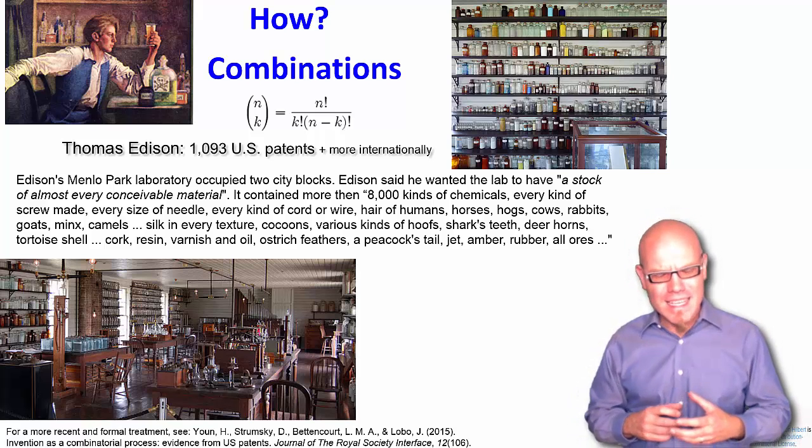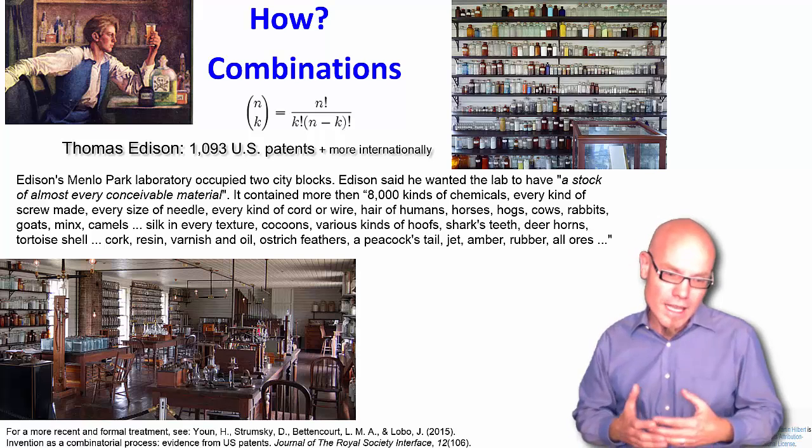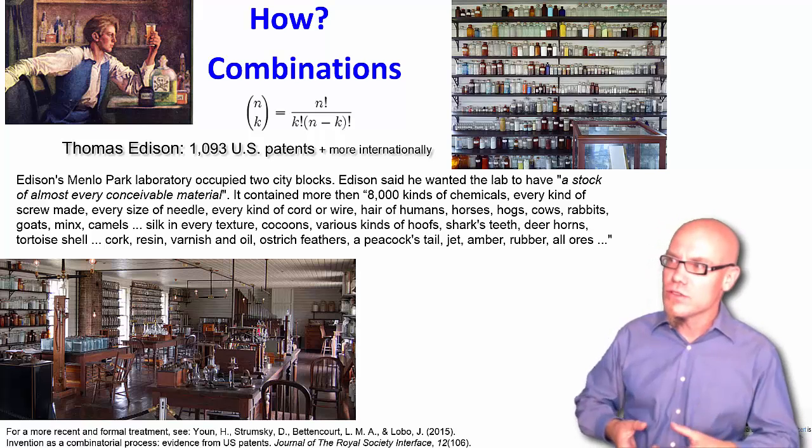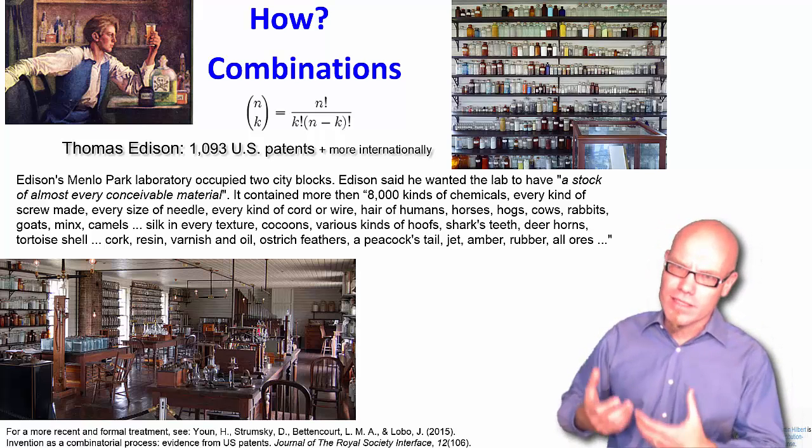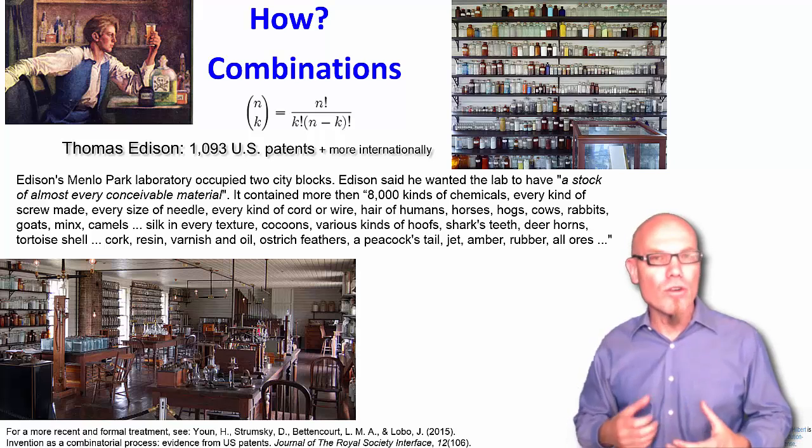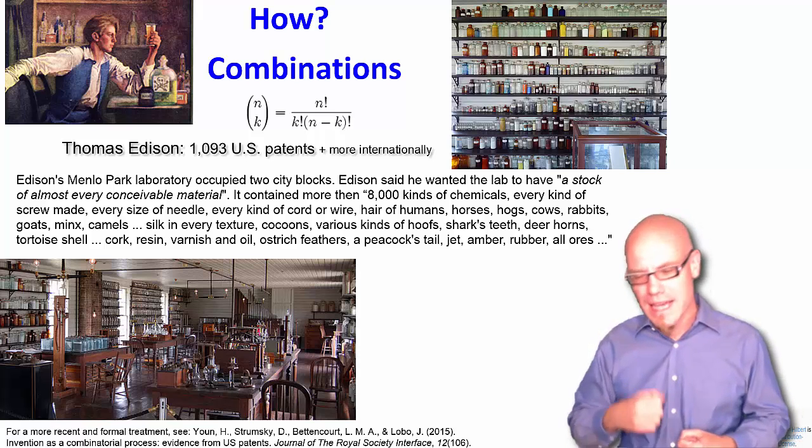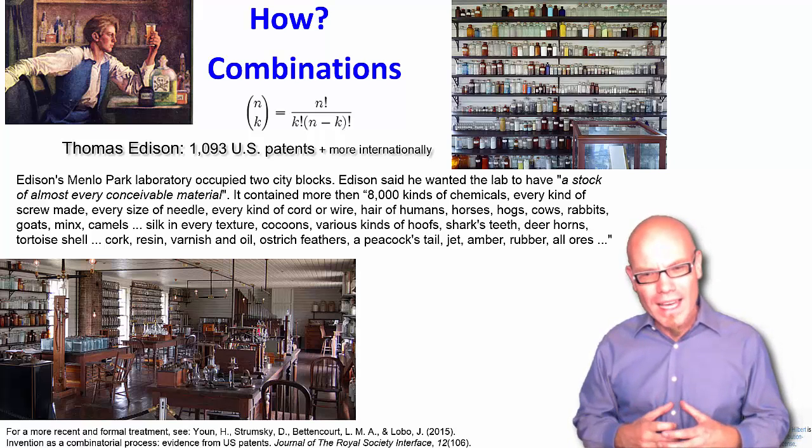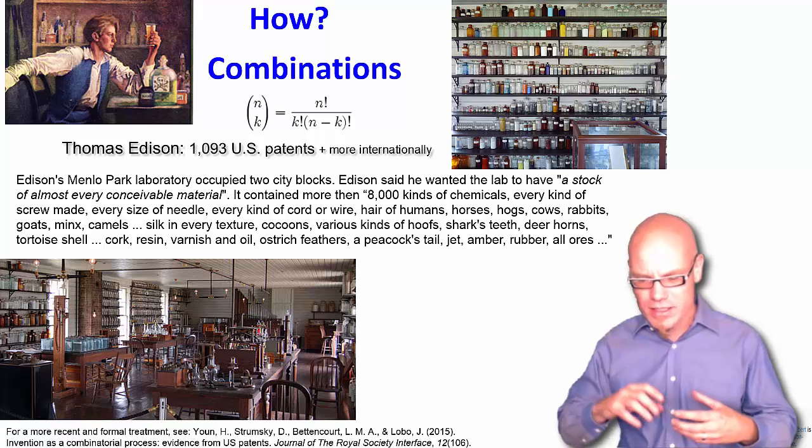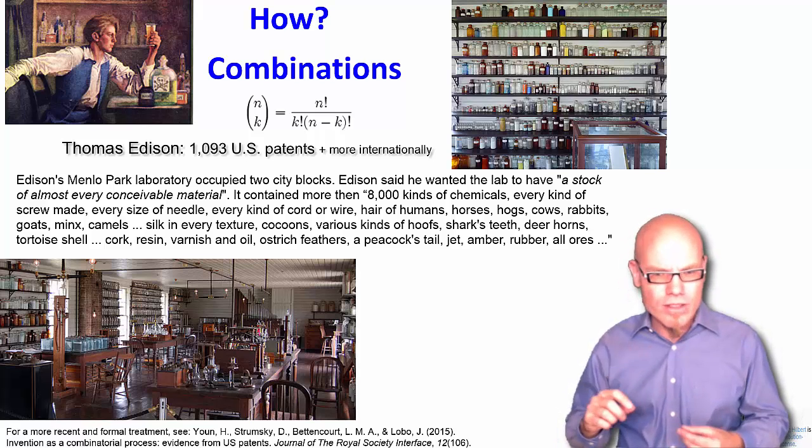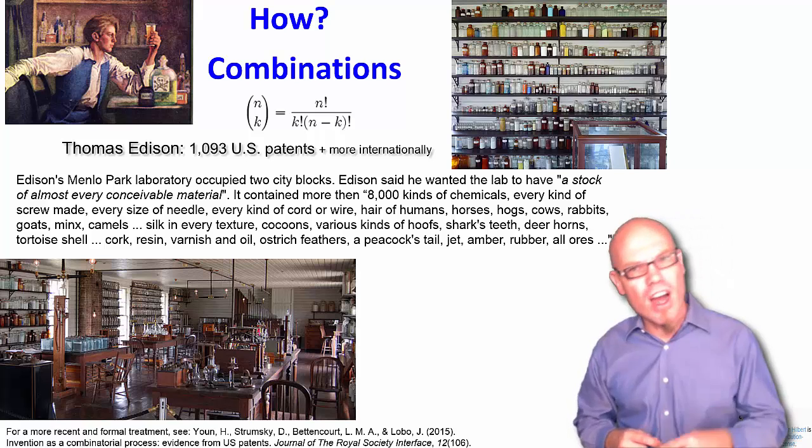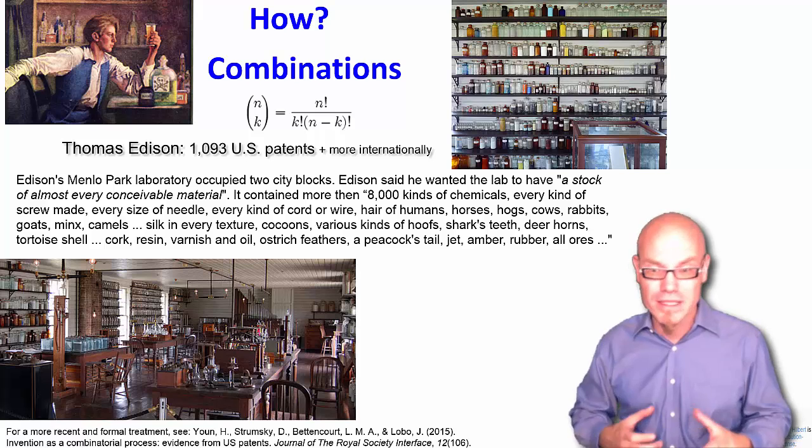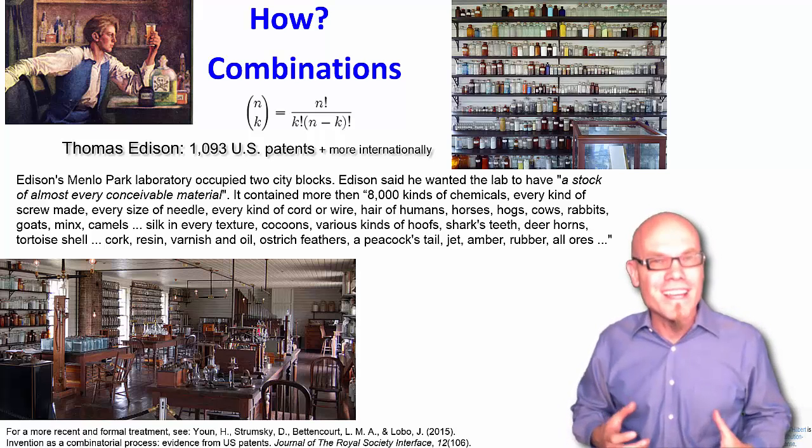For example, back in the days, electricity was already around and it was suggested that one could use electricity to get light out of it. Obviously we knew that lightnings have something to do with light, but nobody knew how to do it. So Edison took on the task and, of course, worked on this kind of problem. And after a while, he seemed to fail a lot of times. He just took electricity and ran it through hoofs and shark teeth and ostrich feathers and peacock tails. A lot of things got burned, but nothing really worked.